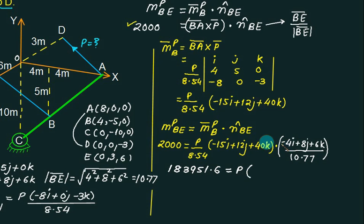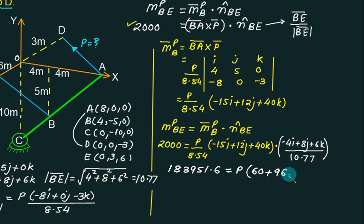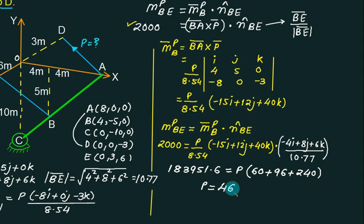On the right-hand side, the dot product of the moment vector with unit vector BE gives: minus 15 times minus 4 equals 60; plus 12 times 8 equals 96; plus 40 times 6 equals 240. Find the sum of these terms and divide the left-hand side by this value to get P, approximately 464.